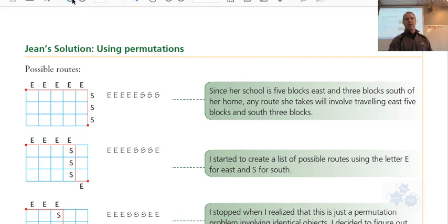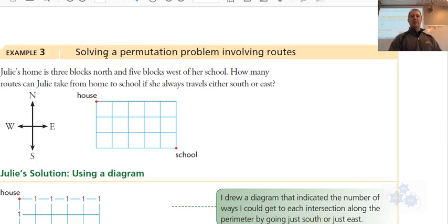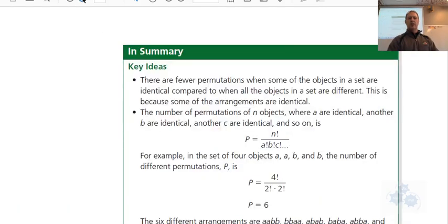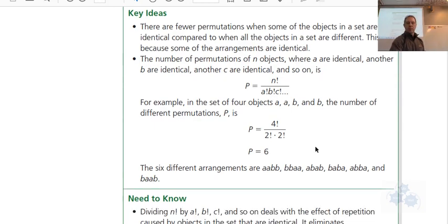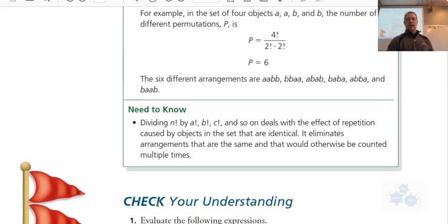We're going to skip these examples for now, as far as the routes, involving the routes examples. So that's going to be the lesson for today. Here's the end summary. It's kind of a short lesson. But basically, repeating objects, you need to divide by the number of identical objects factorial, and then if there are a different set of repeating objects, you need to also consider those as well.